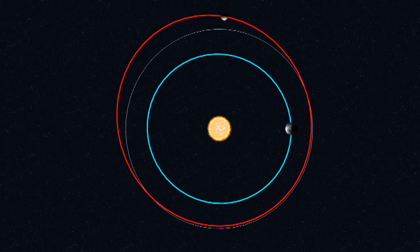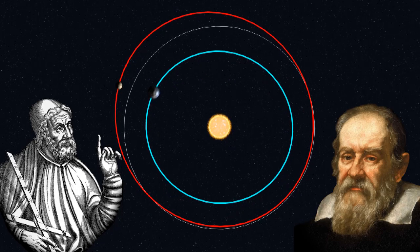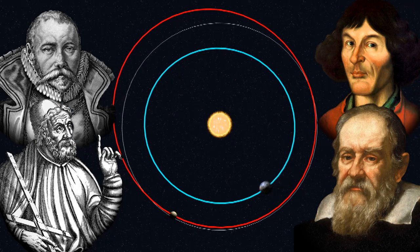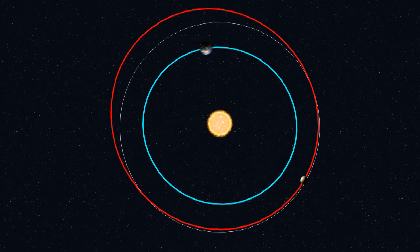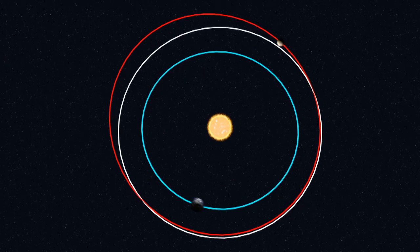Then he discovered the mistake that Ptolemy, Galileo, Copernicus, and every other astronomer had made. The planets don't orbit in circles. They orbit in ellipses.